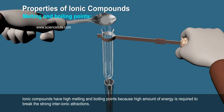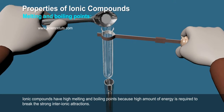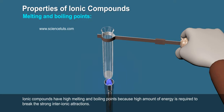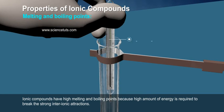Melting and Boiling Points. Ionic compounds have high melting and boiling points because a high amount of energy is required to break the strong inter-ionic attractions.